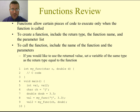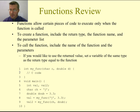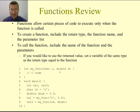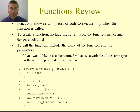Functions allow a certain piece of code to execute only when the function is called. To create the function, like on line 1, we include the return type, the name of the function, and then an optional parameter list. The parameter list could consist of no variables, one variable, or a comma-separated list of more than one. We have the type of the variable followed by a name. That variable is only able to be accessed inside of that function.